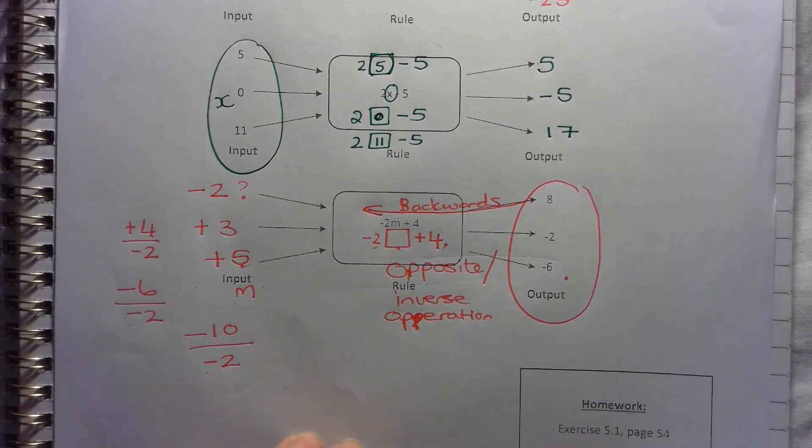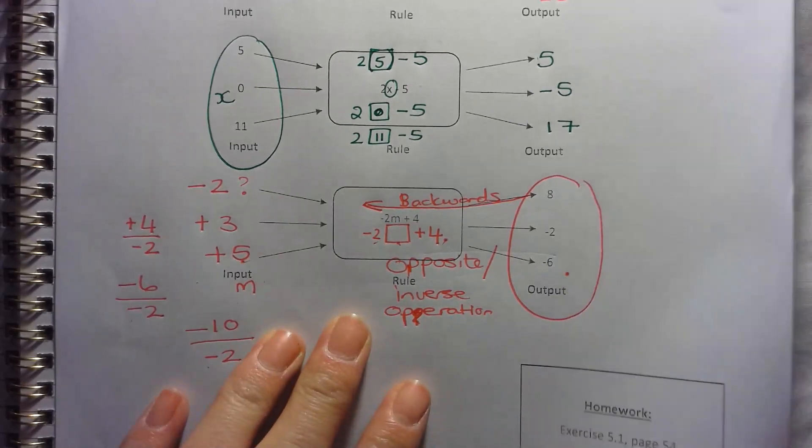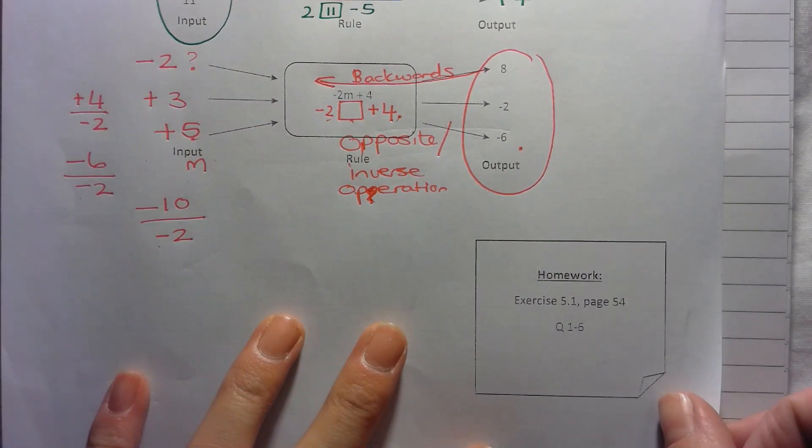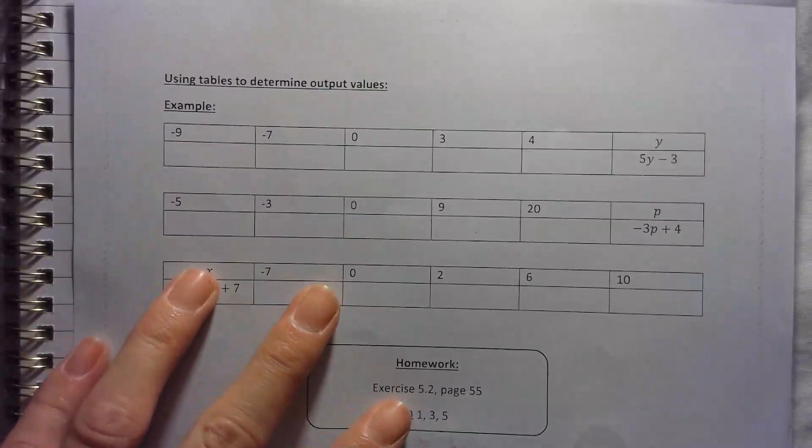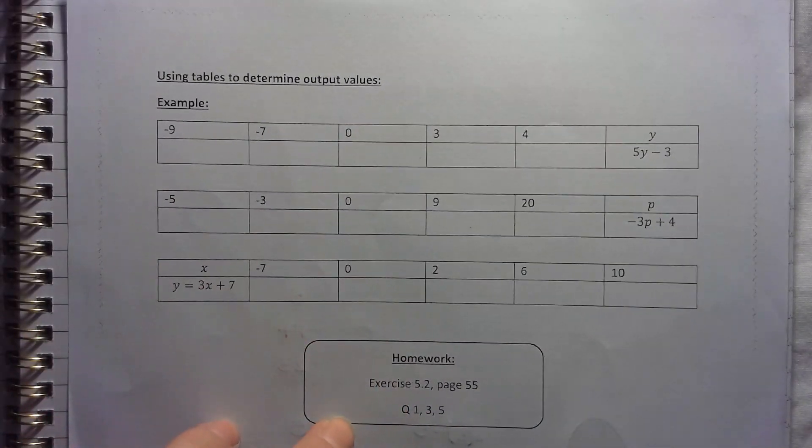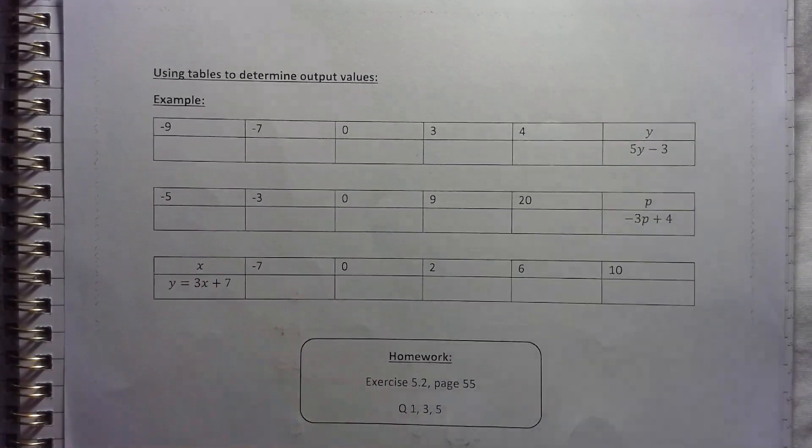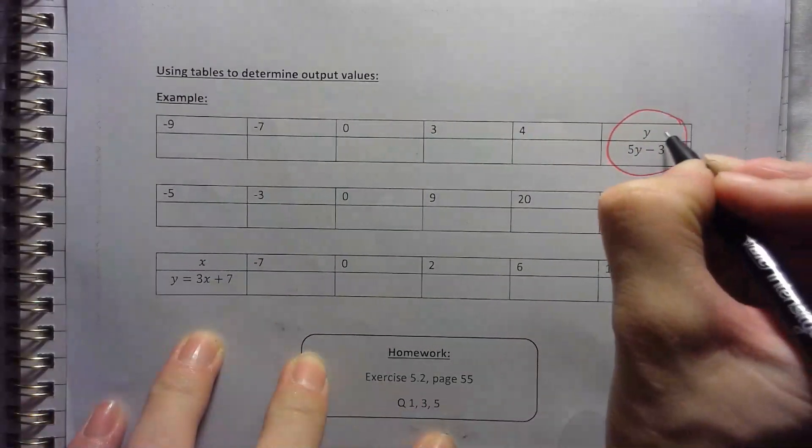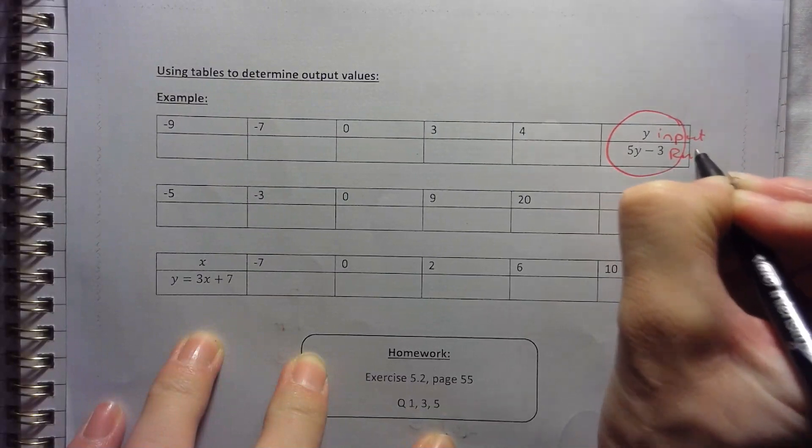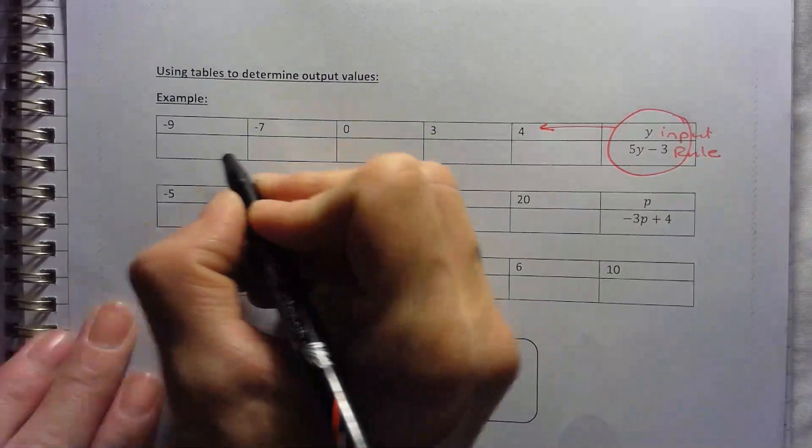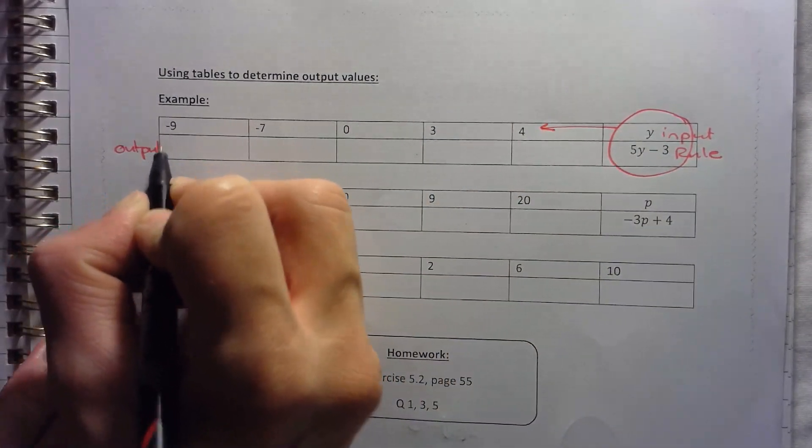Alright. So you can then work on the exercise 5.1. Again, the memo is on the Google Classroom page, the resources page. Then on the next page, next side of the note, it's the same as what we worked with in unit 4 using tables to determine output values. We just don't call them input or output. So here's the rule. This is your input and your rule. So that's all your input values. And then this empty block is going to be your output values.